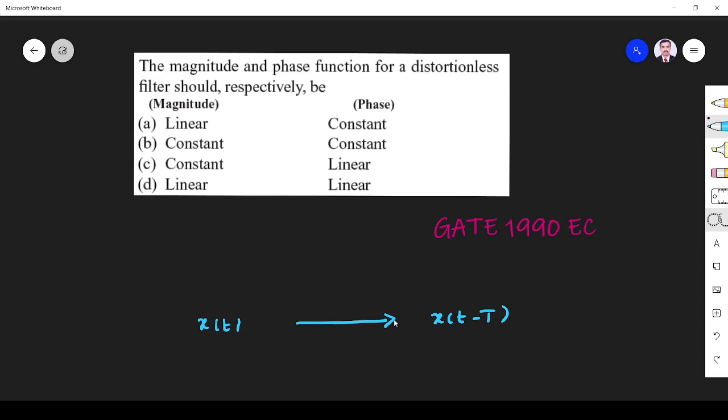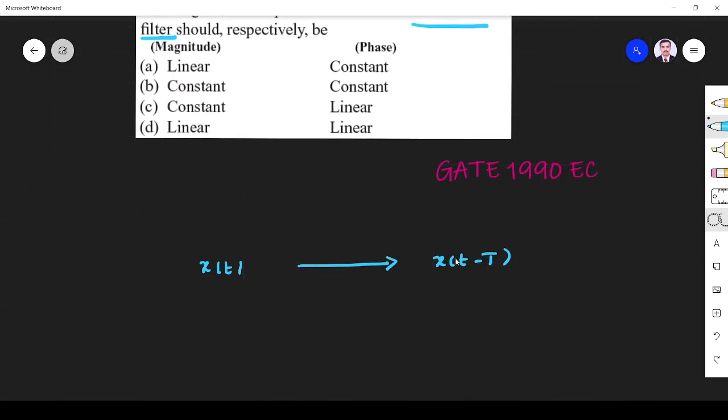Whatever you transmit takes some time—it may be nanoseconds or picoseconds—but it will be received after some time. If it is distortionless, whatever we have transmitted should reach. I transmitted X(t), so the same thing X(t-T) is received. In between, I have this channel.